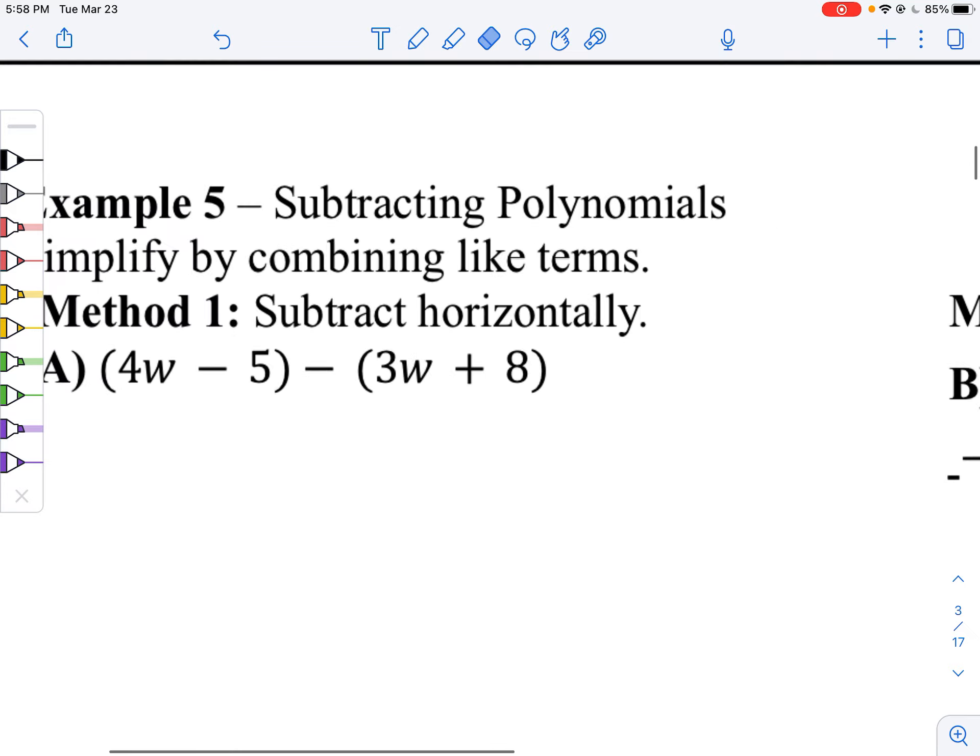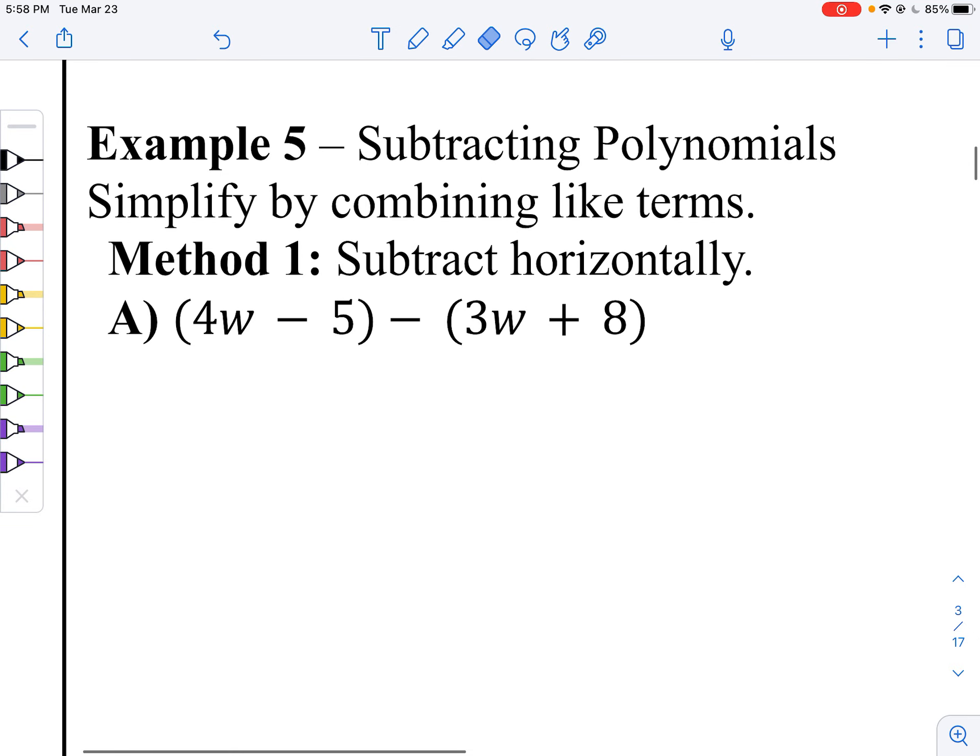You're going to take your minus sign, and you're going to say, just kidding, I'm going to make everything negative instead. Distribute your negative to both terms of your polynomial. So, you're going to take this negative, and you're going to say, just kidding, you're a negative, you're a negative, and you are now positive. And that's how subtraction works.